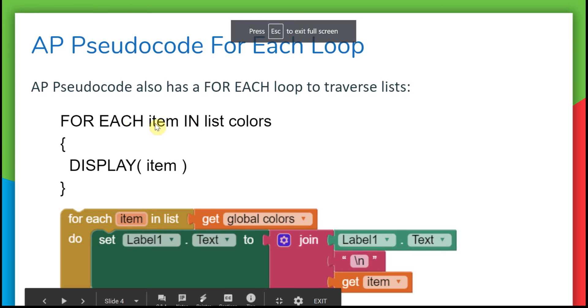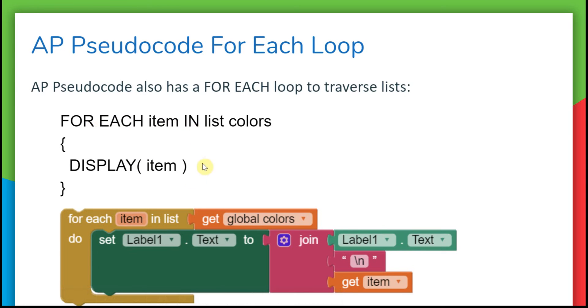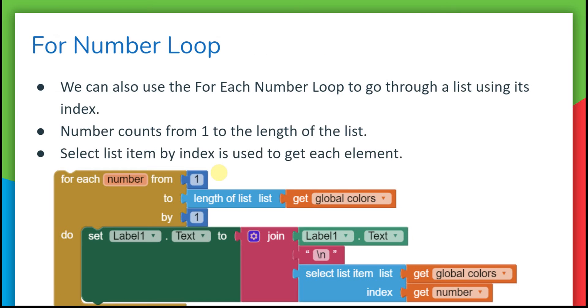In the AP Pseudocode, there's also a for-each loop that looks exactly the same as App Inventor. You mention the list and then you can use that variable item, which will successively be each item in the list. This is the simplest loop to use with a list.